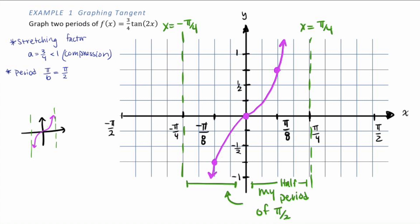We can continue on either side. At 3π/8 we have negative 3/4, and at negative 3π/8 we have 3/4. Our next zero is at π/2. This gives us two full periods of our graph.